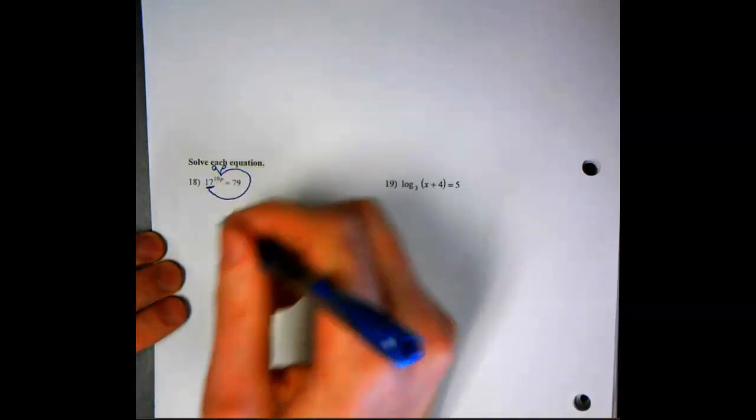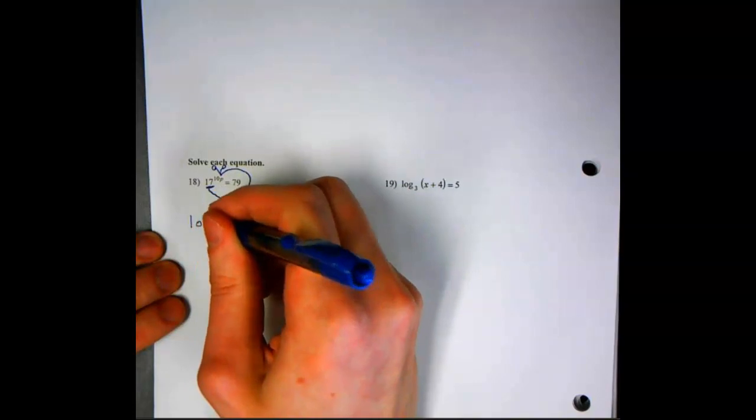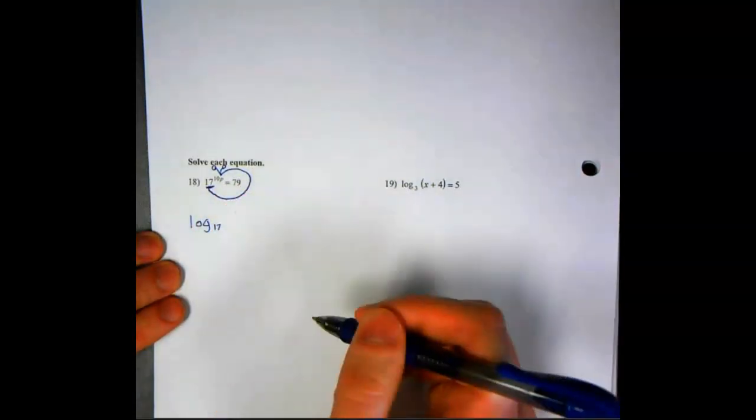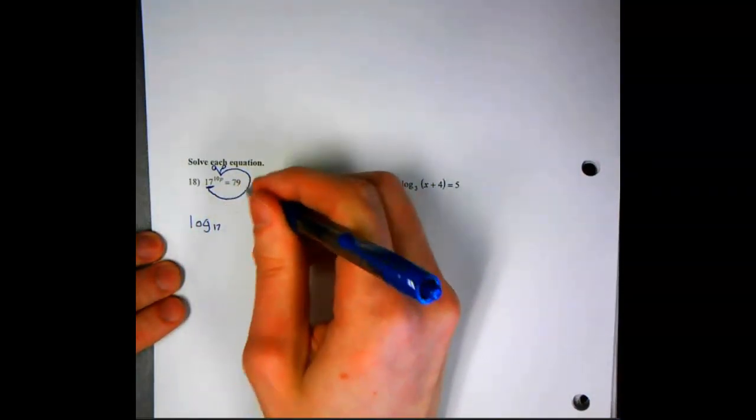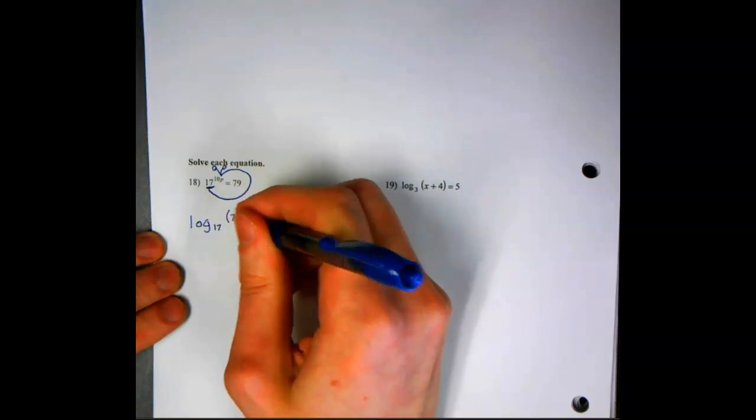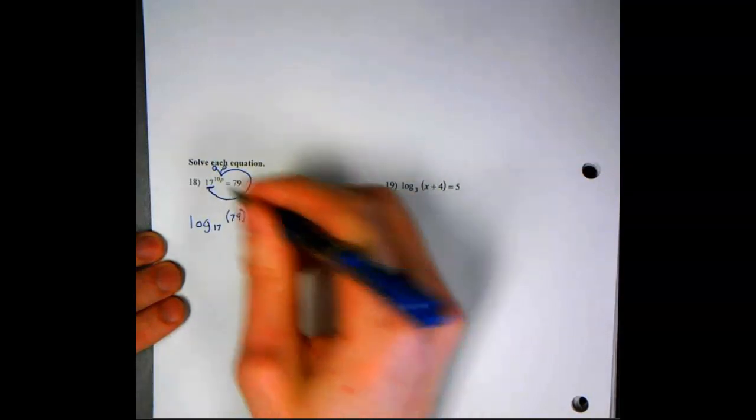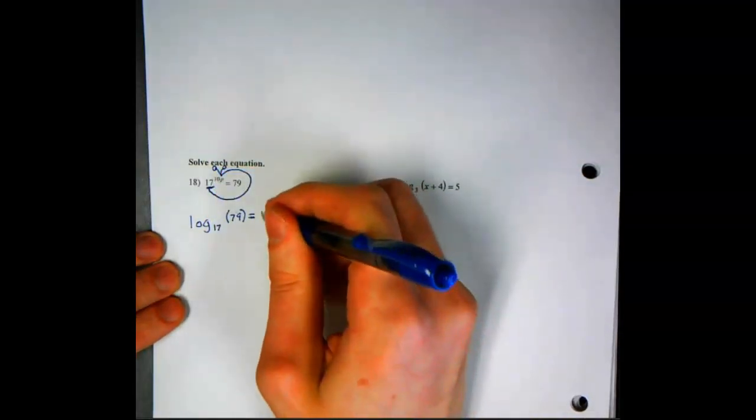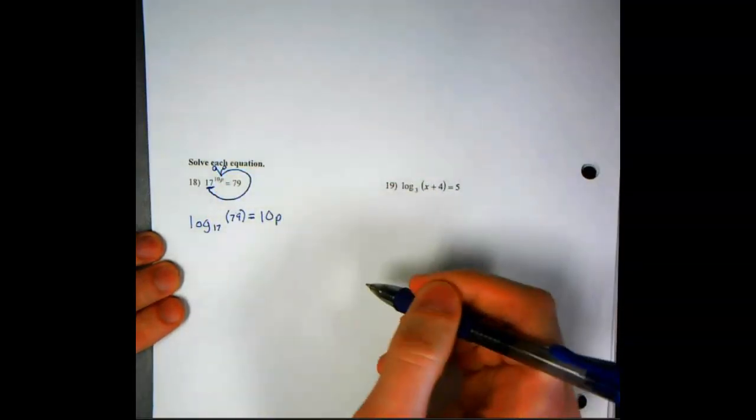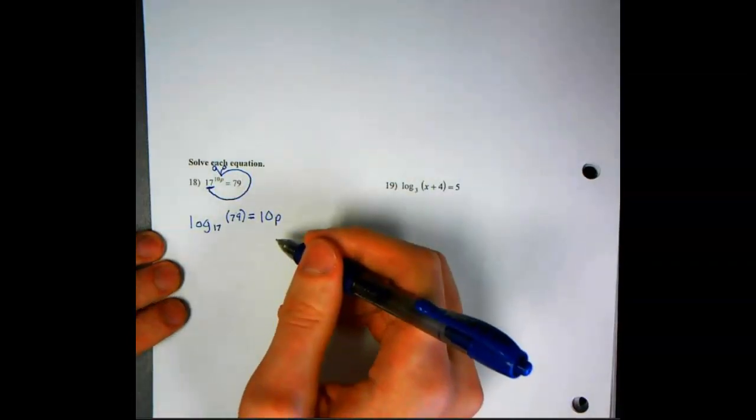Now we started out with that 17, so we'll have log base 17. We went around the 79, so we'll say 79, and we'll set it equal to where we ended, which was our exponent. So we'll say 10p. Now we need to finish solving for p.